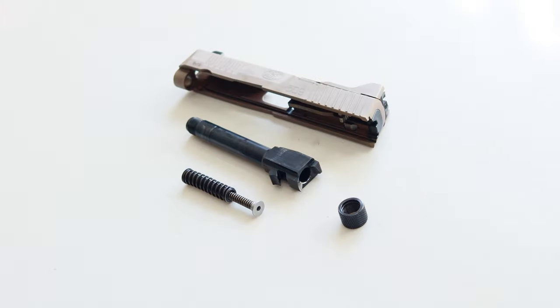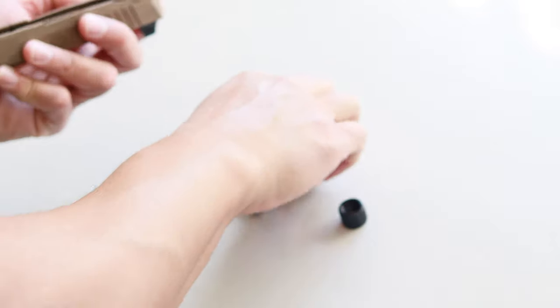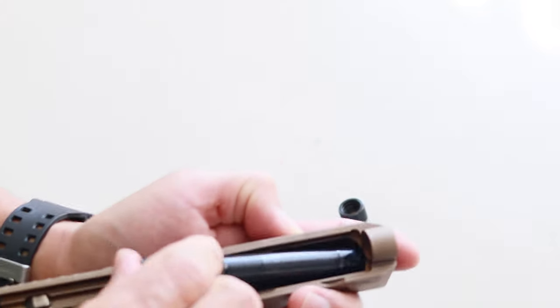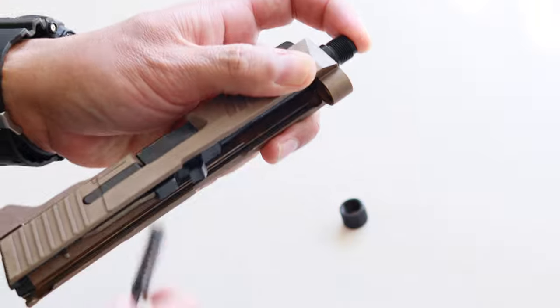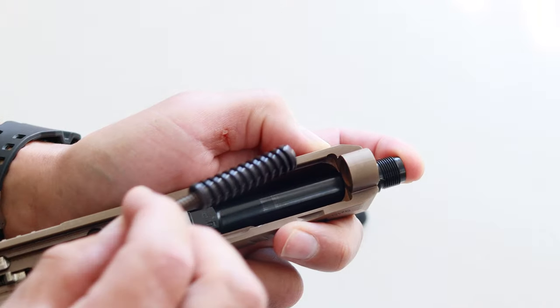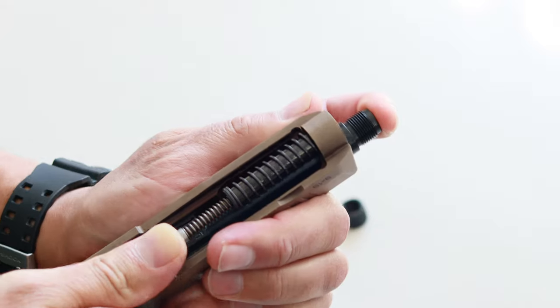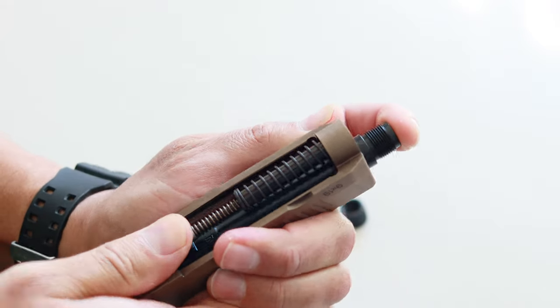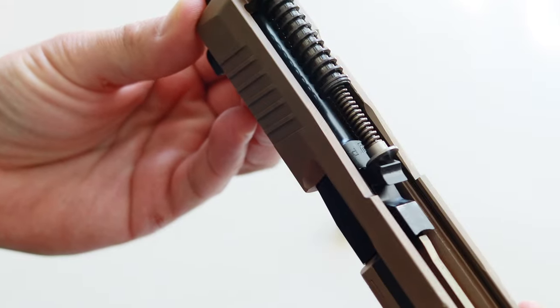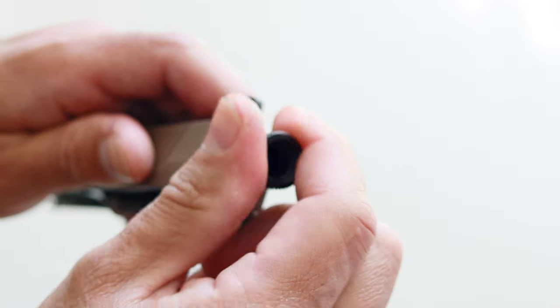Let's reassemble the slide. First, reinstall the barrel. Now insert your recoil spring. Push it up towards the muzzle end and let the spring decompress towards the chamber end. And it should look like this. Now screw the thread protector back on.